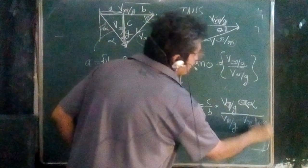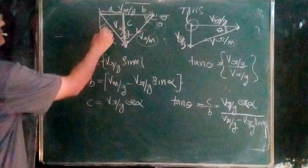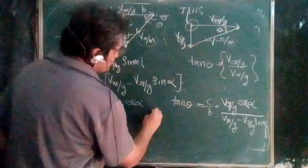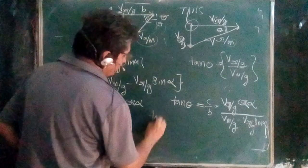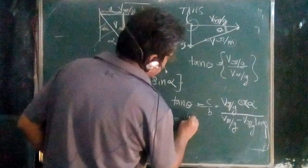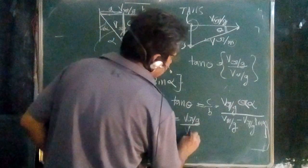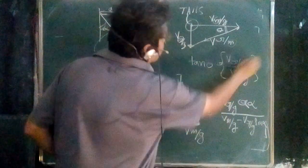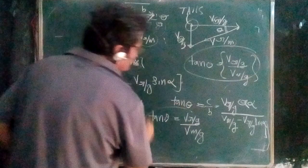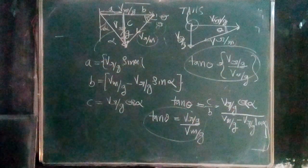If alpha = 0 (rain falling vertically), then tan θ = V_rain with respect to ground × cos 0 / (V_man with respect to ground − V_rain with respect to ground × sin 0) = V_rain with respect to ground / V_man with respect to ground, which is exactly what we found initially. So this is the general formula.